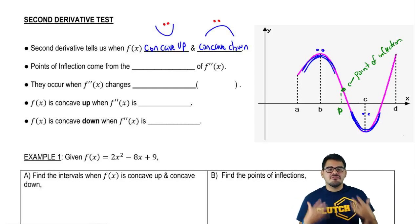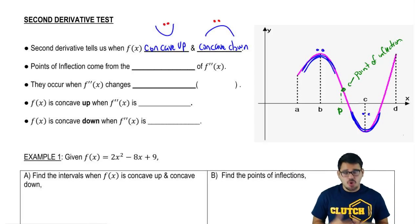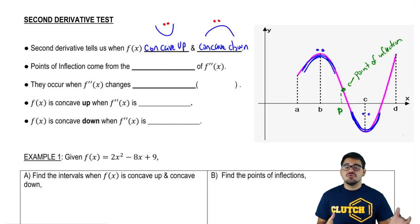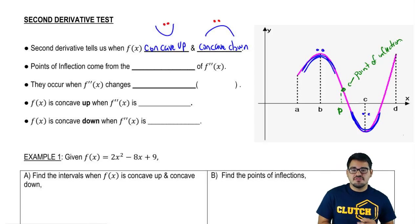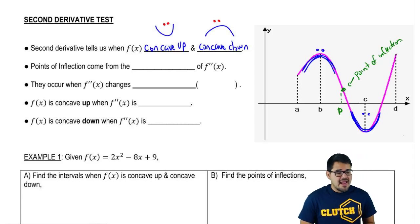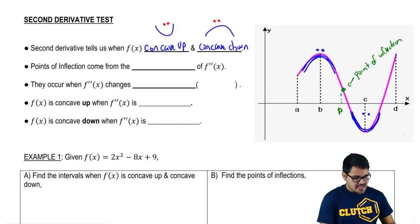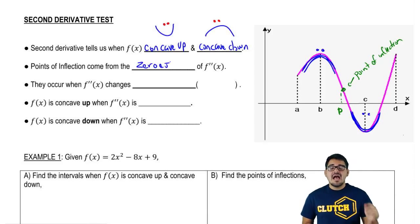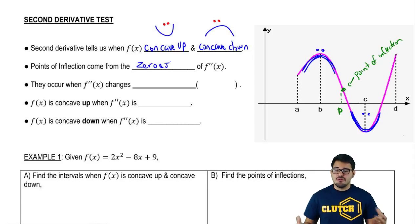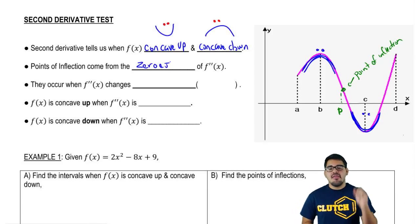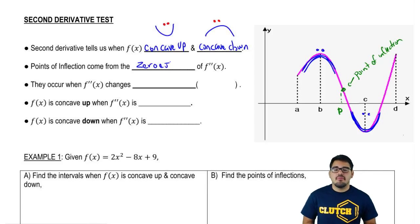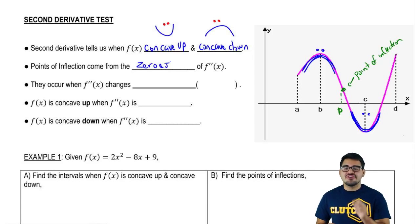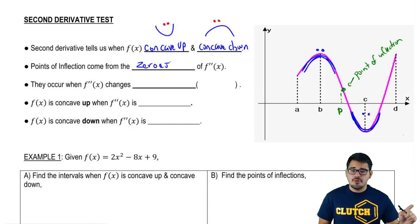The point where concavity changes is called a point of inflection. Points of inflection are analogous to critical numbers in the first derivative test. They come from the zeros of the second derivative — we find the second derivative, set it equal to zero, and those x-values are our possible points of inflection. I emphasize 'possible' because not every zero of the second derivative is a point of inflection, since there isn't always a change in concavity.